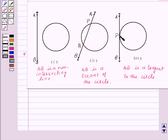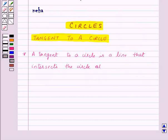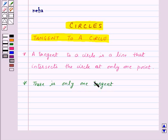Now, here at point P, we cannot draw any other tangent to the circle. So that means there is only one tangent at a point of the circle.